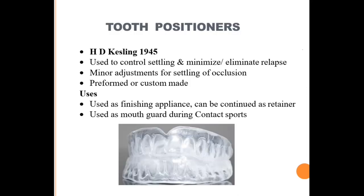The tooth positioner, introduced by H.D. Kesling in 1945, was designed for use during the finishing and detailing stage of orthodontic therapy where minor occlusal adjustments can be achieved. He also advocated using it as a retainer. The main advantages are maintaining intra-arch tooth position and occlusal relationships. Major disadvantages include bulkiness, less effectiveness in retaining rotation corrections, and low durability.